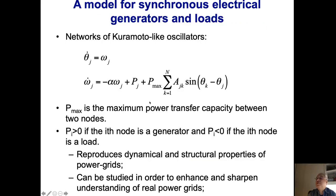To address this problem, we consider this model. It's a very nice model based on the Kuramoto model—a second-order Kuramoto-like oscillator. We have phase and frequency. We have the power that feeds a specific point of the network. P_max is the maximum power transfer capacity between two nodes. This is a network with an adjacency matrix: it is one if node j is connected to node k, zero otherwise. It's a non-linear system that reproduces dynamical and structural properties of the power grid, allowing us to understand general features including power grid scenarios.